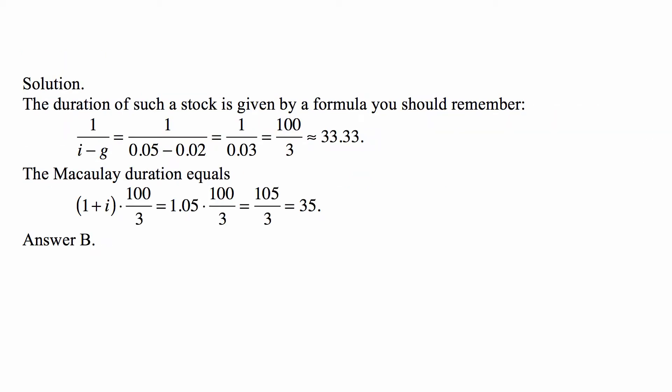Here's the solution. A very important message in this is that you should know that the duration of a stock modeled in such a way that it's a dividend increasing at the same growth rate every year, in this case the growth rate is 2% and then discounted at the same discount rate always, which is 5% in this case. So the duration of it, not the Macaulay duration but regular duration, is 1 over i minus g.